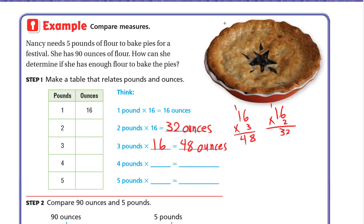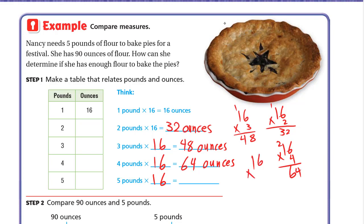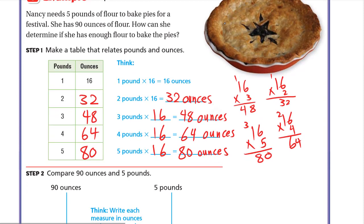Four pounds: four times 16 — 4 times 6 is 24, write 4 carry 2; 4 times 1 is 4 plus 2 is 6, so 64 ounces. Five pounds: five times 16 — 5 times 6 is 30, write 0 carry 3; 5 times 1 is 5 plus 3 is 8, so 80 ounces. So: 1 pound = 16 oz, 2 pounds = 32 oz, 3 pounds = 48 oz, 4 pounds = 64 oz, 5 pounds = 80 oz.